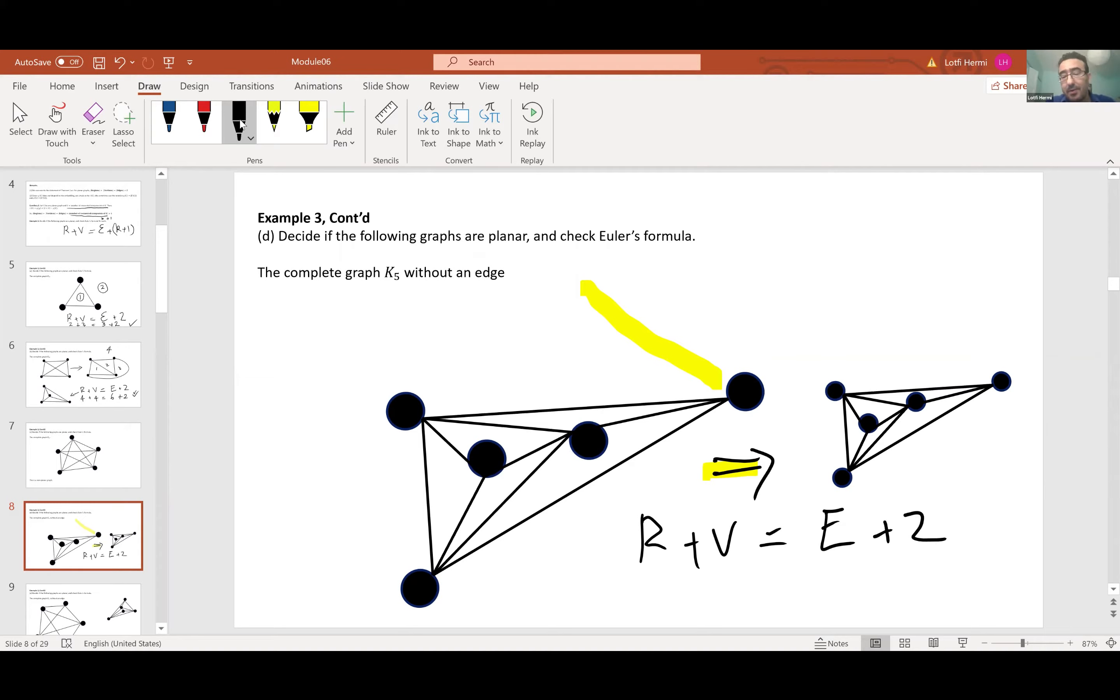For the edges, we have basically K5 without one edge, right? K5 should have, for every vertex, four edges. That's 20. 20 over 2, that's 10, because every edge connects two vertices. Minus one would be 9. So I should have 9 edges here: 1, 2, 3, 4, 5, 6, 7, 8, 9.